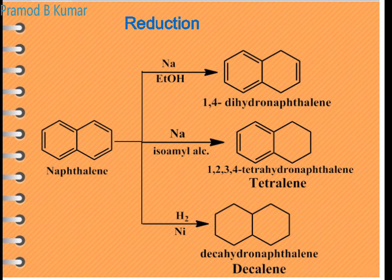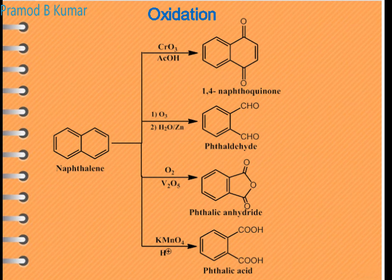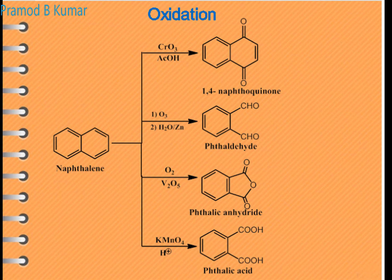Oxidation of naphthalene: when treated with chromium oxide and acetic acid, you get 1,4-naphthaquinone. When treated with ozone, zinc and water, you get phthalaldehyde. When treated with oxygen and vanadium pentoxide, you get phthalic anhydride. When treated with KMnO₄, you get phthalic acid, where ring opening occurs. These are important oxidation reactions of naphthalene.